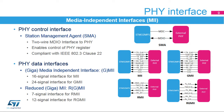Several media-independent interfaces are supported by the peripheral, depending on the selected data rate. For 10 and 100 megabits data rate, the peripheral supports the classical Media Independent Interface, or MII, requiring 16 signals between both devices, and the reduced MII requiring only 7 signals, allowing I/O saving. For 1 gigabit data rate, the peripheral supports the GMII and its reduced pin count version, the RGMII interface.